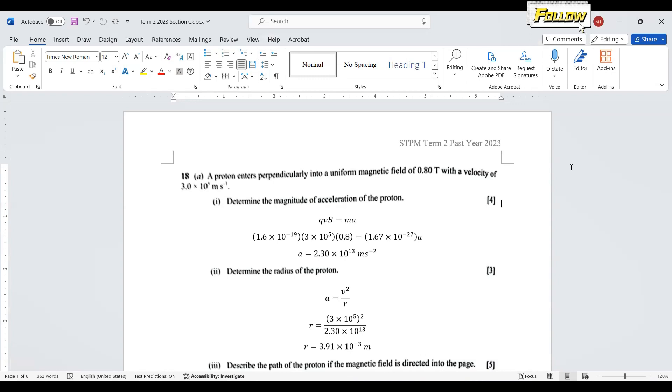Part (i) asks to determine the magnitude of acceleration of the proton. I think this question may be a bit misleading because the proton will move in a circular motion. We know there is a magnetic force which is qvB, and the force equals ma. Applying this formula...